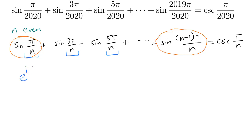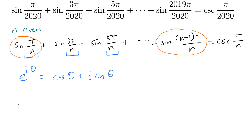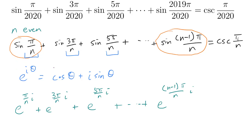So rather than writing sine of pi over n, we work with e to the i times that angle. Since we have an arithmetic sequence in the angle, raising e to those powers gives a geometric sequence. We can write e to the pi over n times i, then e to the 3 pi over n times i, and so on. We want the sum of sine theta, not e to the i theta — but we can fix that by simply taking the imaginary part of the entire sum once evaluated.